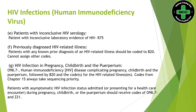The primary code should be O98.7. Check whether it is complicating pregnancy or childbirth, and accordingly assign the appropriate pregnancy code from Chapter 15, with B20 as secondary.